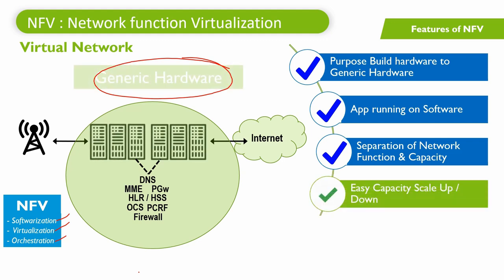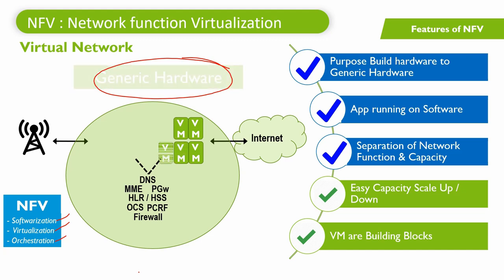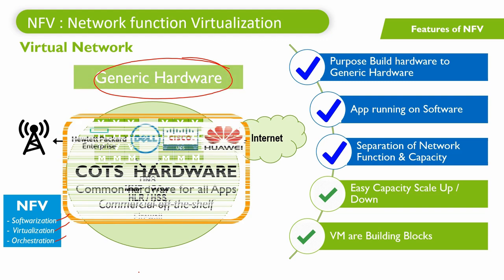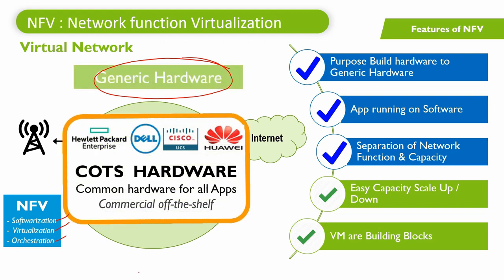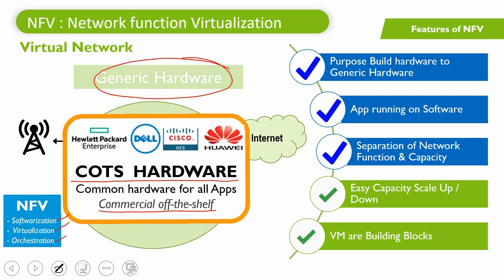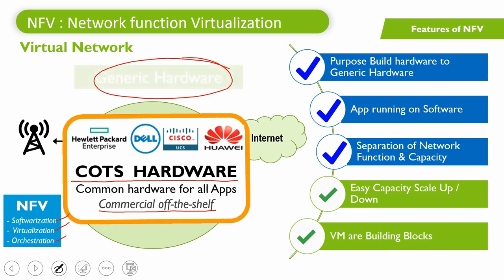NFV uses virtual machines as the key building blocks where applications can be hosted. These virtual machines have flexible capacity and can host any application. NFV turns traditional network hardware into virtualized network functions, and these VNFs run on generic hardware such as HP and Dell — we also call this generic hardware COTS, which stands for commercial off-the-shelf hardware. NFV also enables service chaining, which allows multiple functions to be used in sequence.